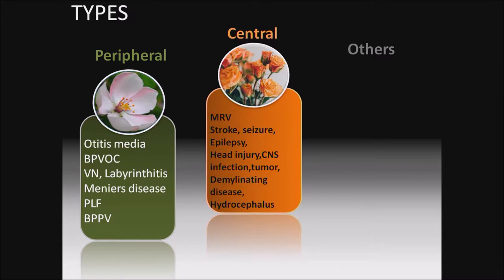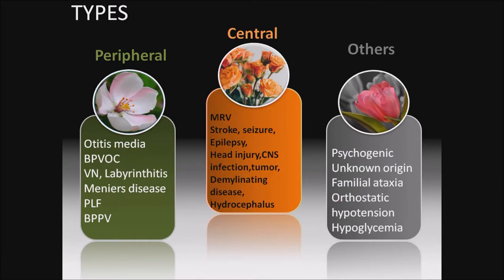Central types: migraine-related vertigo — most common in children — stroke, seizure, epilepsy, head injury, CNS infection, tumor, demyelinating disease, and hydrocephalus. Others include psychogenic vertigo — again most common in children — unknown origin of vertigo, familial ataxia, orthostatic hypotension, and hypoglycemia.